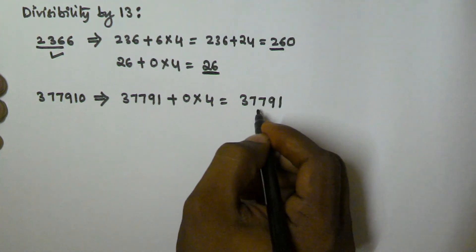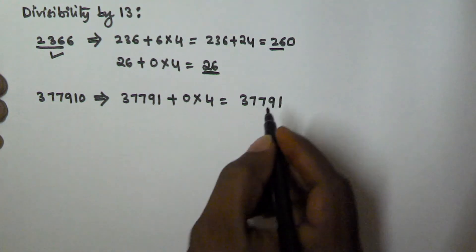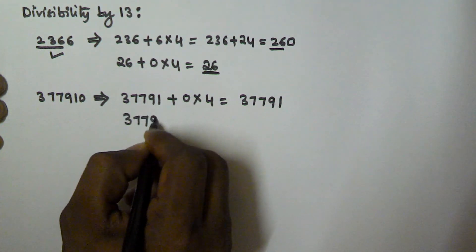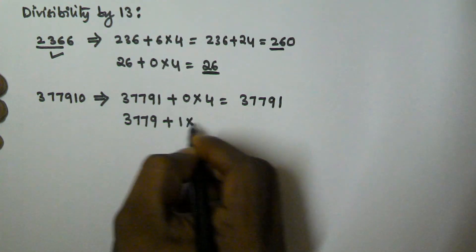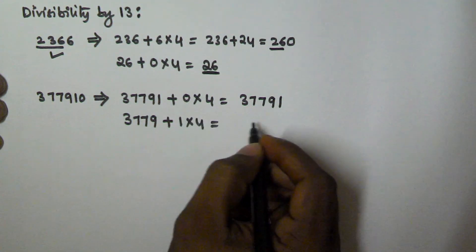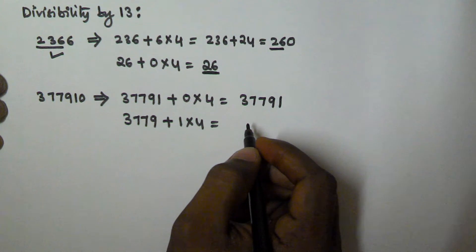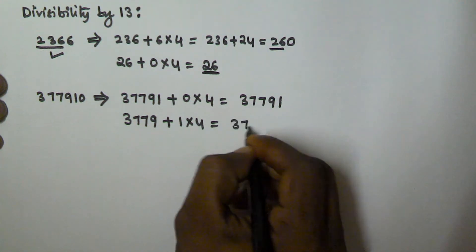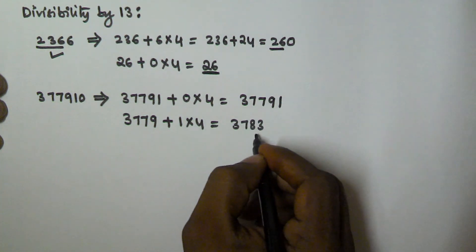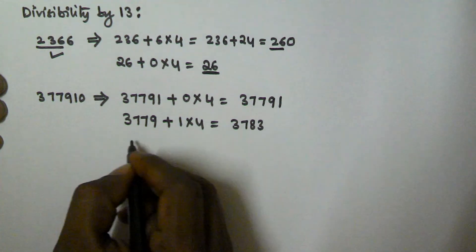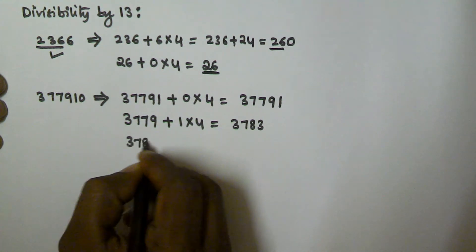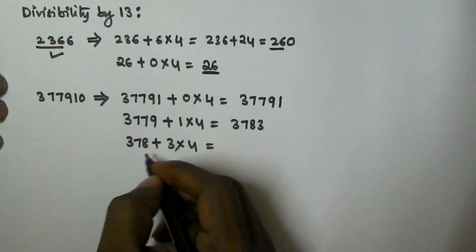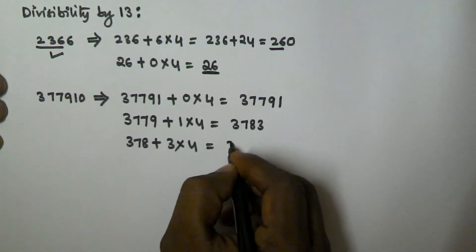We still do not know if 37791 is divisible by 13, so we take all the digits except the unit digit and multiply the unit digit by 4. That gives us 3779 plus 1 times 4, equal to 3783. Again we do not know, so we take all digits except the unit digit and multiply the unit digit by 4: 378 plus 3 times 4 equals 378 plus 12, which is 390.